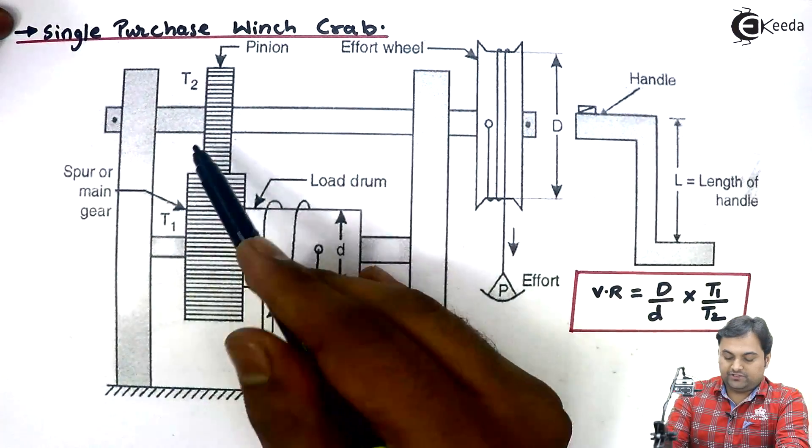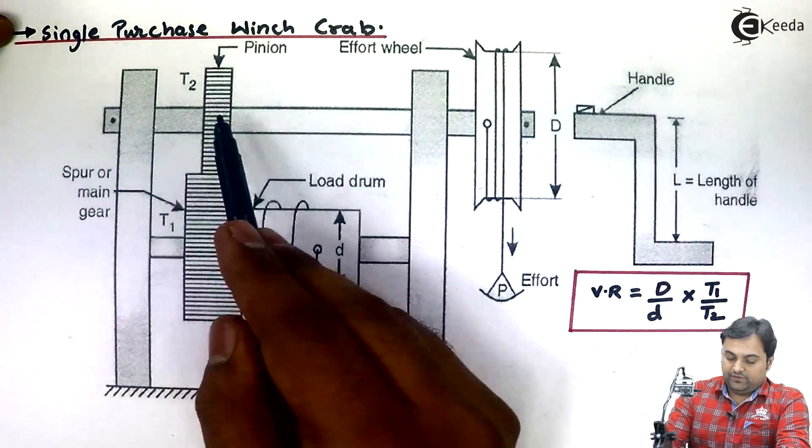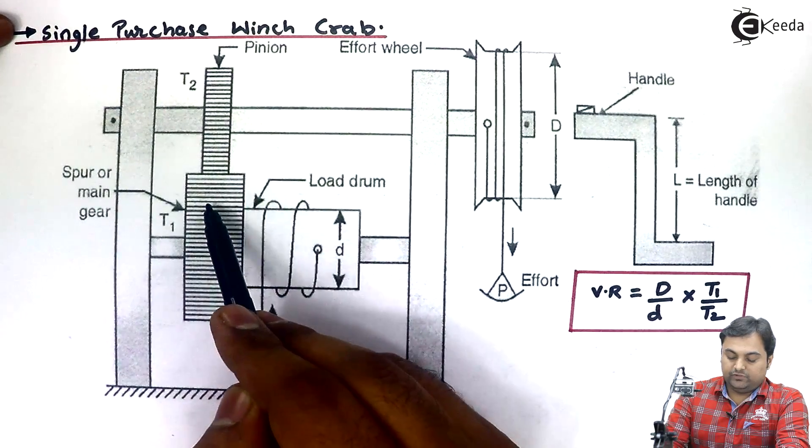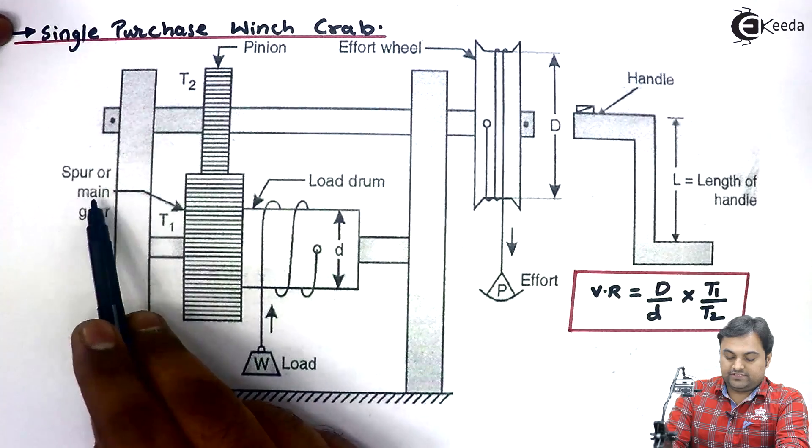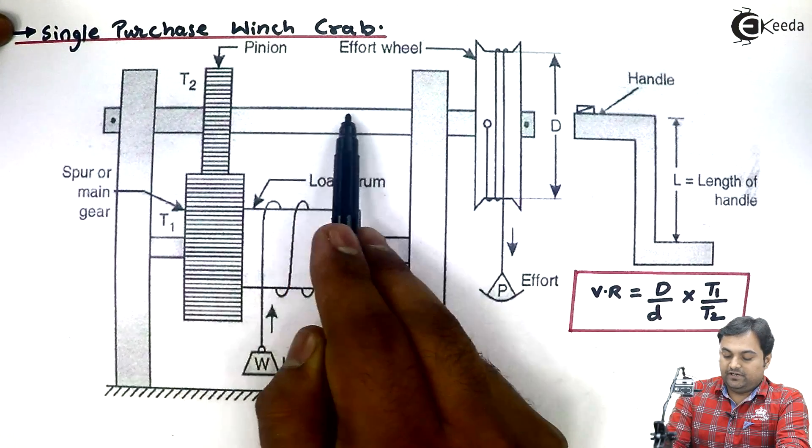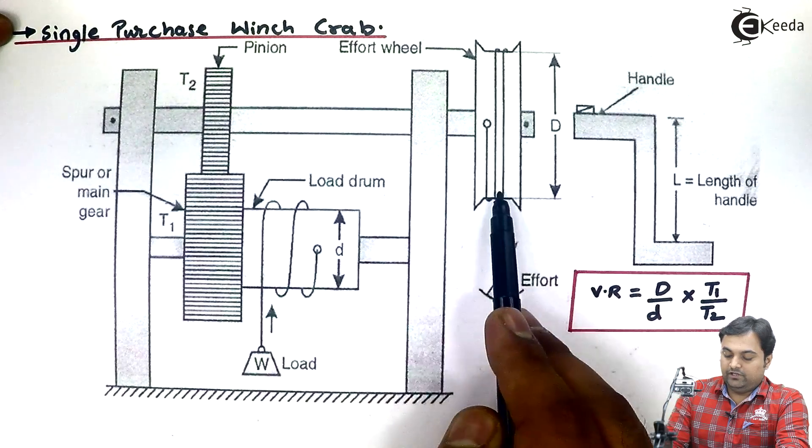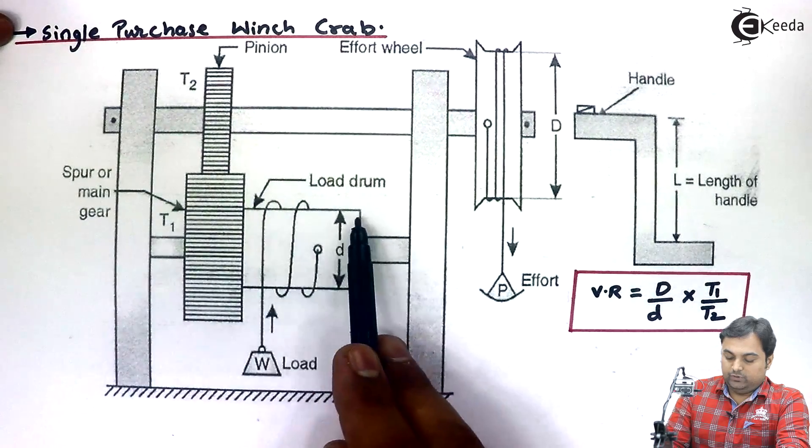It is called as winch crab because of the gears present here. First, understand the construction. We are having two gears which are mounted: smaller gear is called as pinion, bigger one is called as spur gear or main gear. Pinion is connected with the help of shaft to the wheel which is called as effort wheel. Spur gear is connected to load drum.